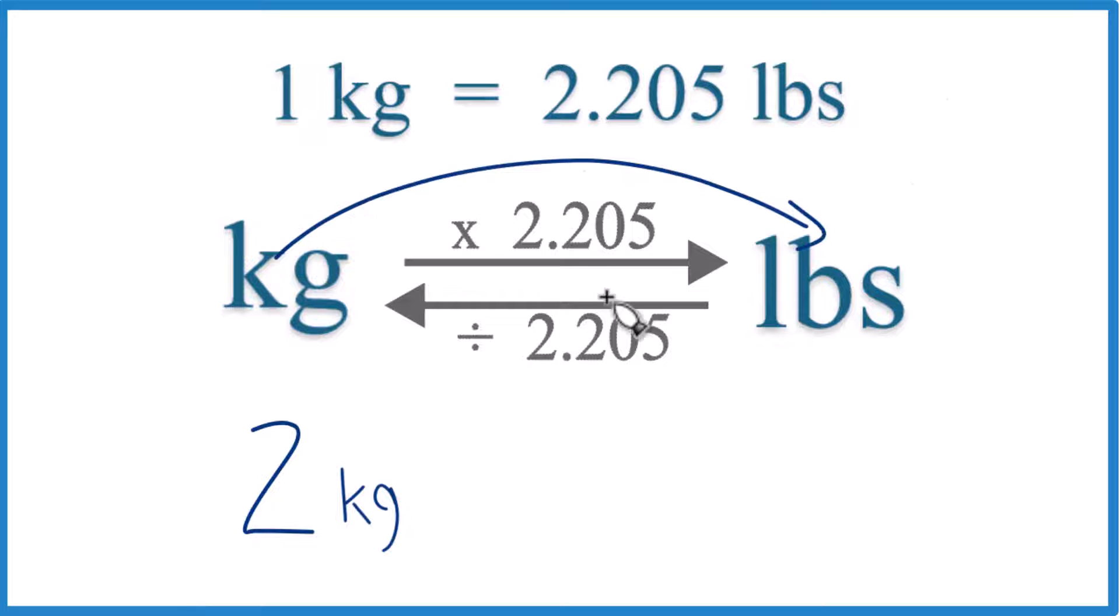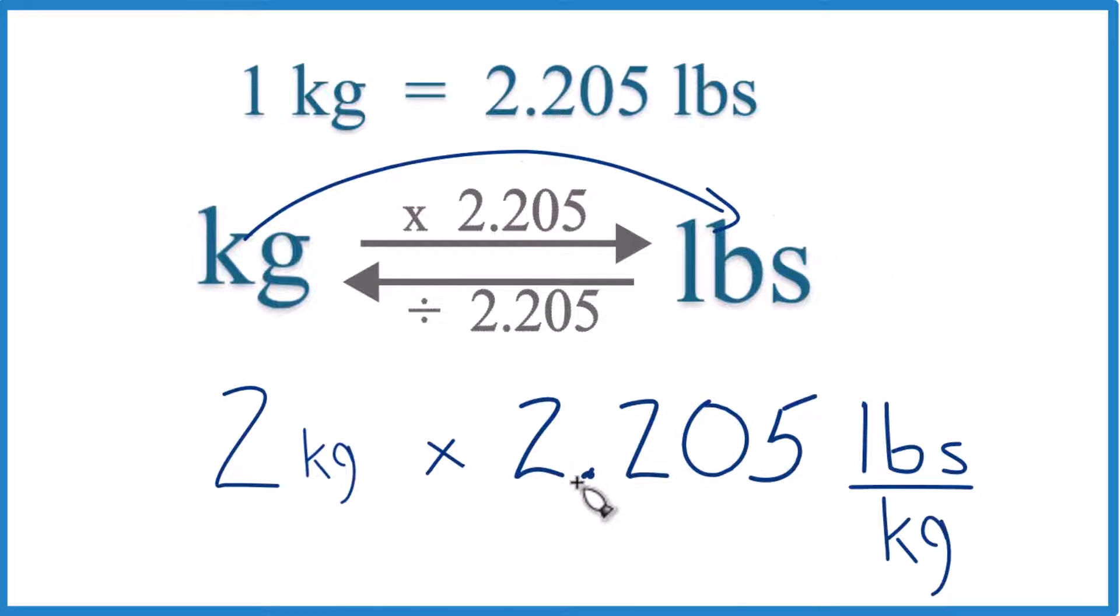we're going to go kilograms to pounds, and that means we're going to multiply by 2.205, like this. And that's 2.205 pounds per kilogram in each kilogram. That's our conversion factor.